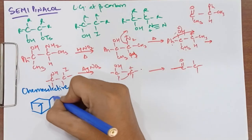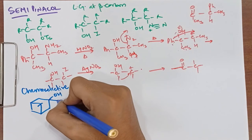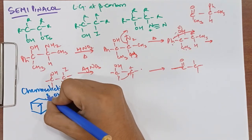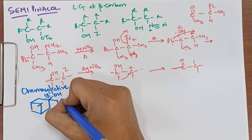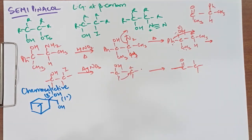Here we have one OH here and one OH here. This is our secondary OH and this is our primary OH group.